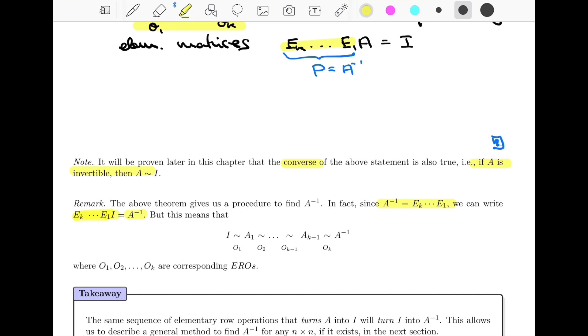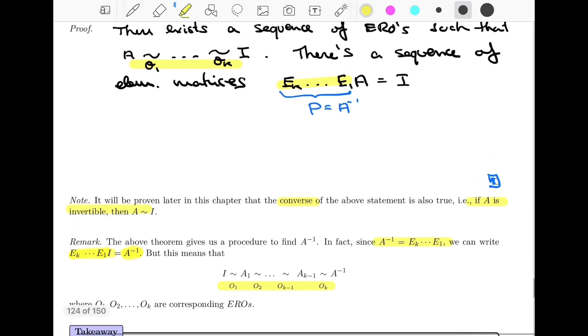And so if you look at the statement now, you notice that it's saying that if you left multiply I by E1 all the way to EK, which is the same thing as applying the elementary operations O1 to OK, well, the result will be A inverse.